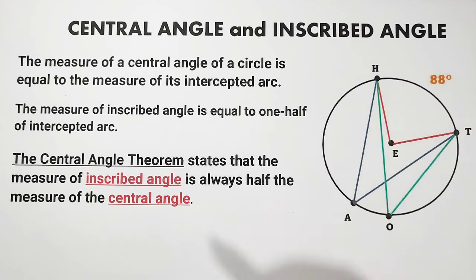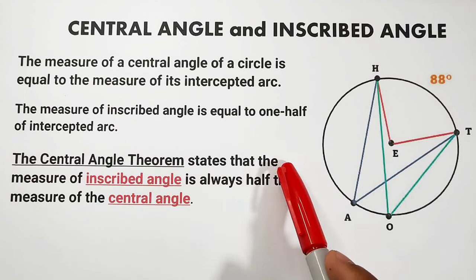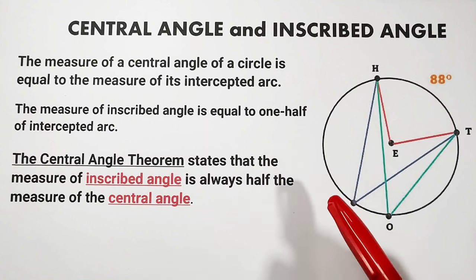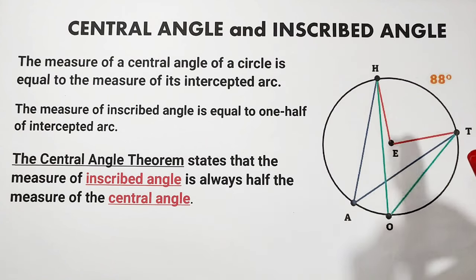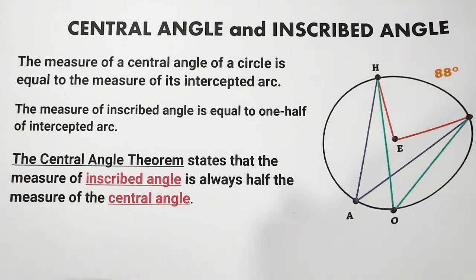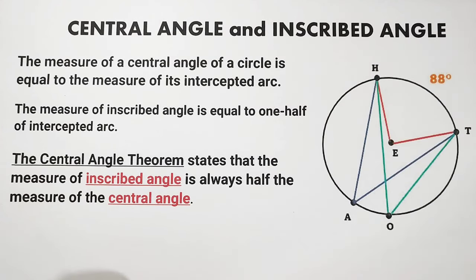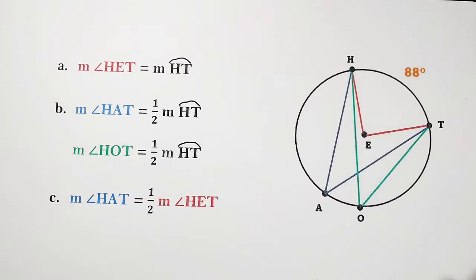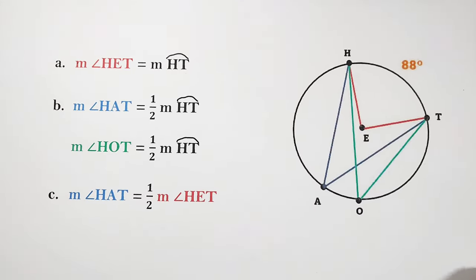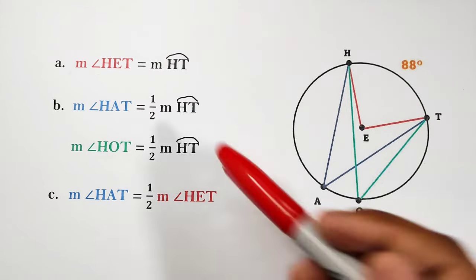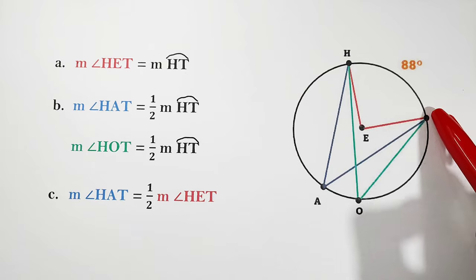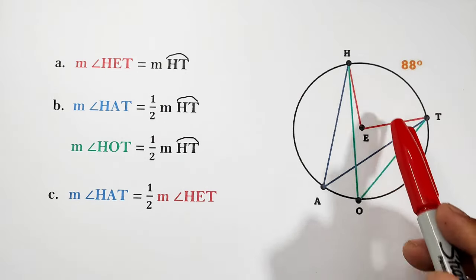Based on the theorem, the central angle theorem states that the measure of an inscribed angle is always half of the measure of the central angle. So the measure of angle HET, our central angle, is equal to the measure of arc HT — that is the intercepted arc.